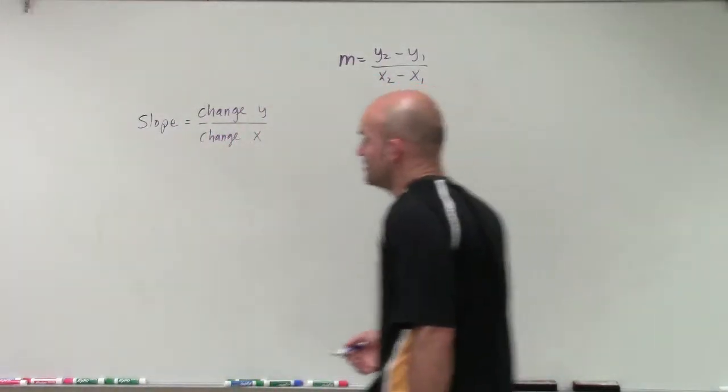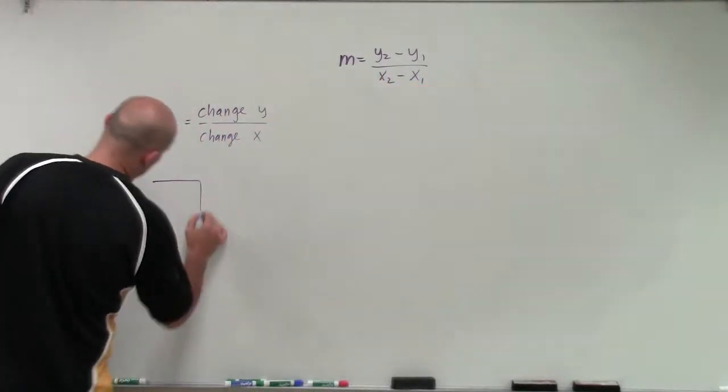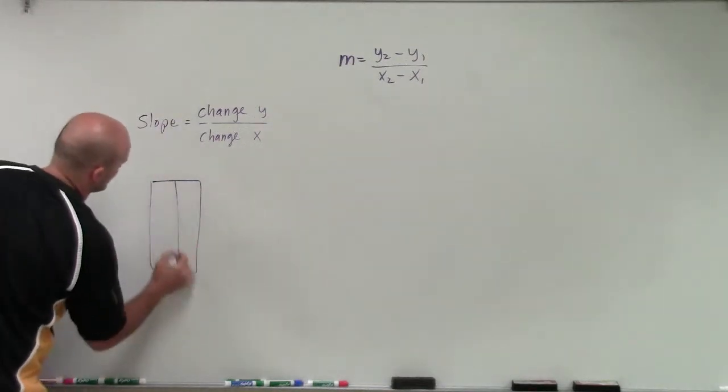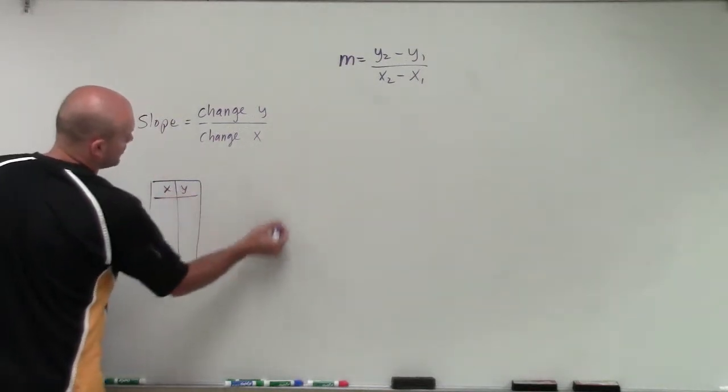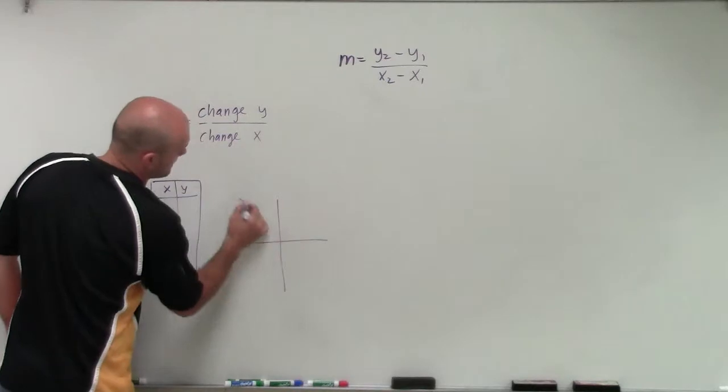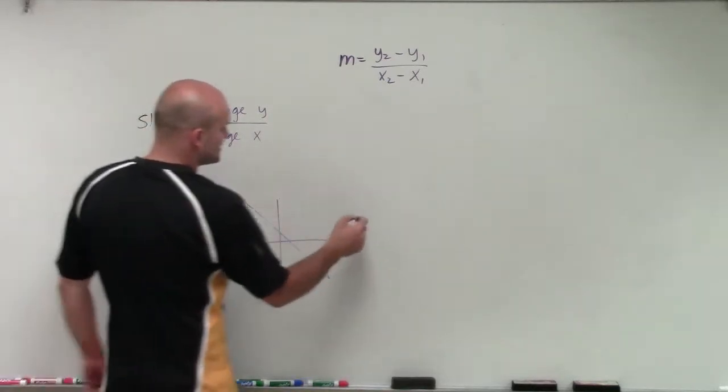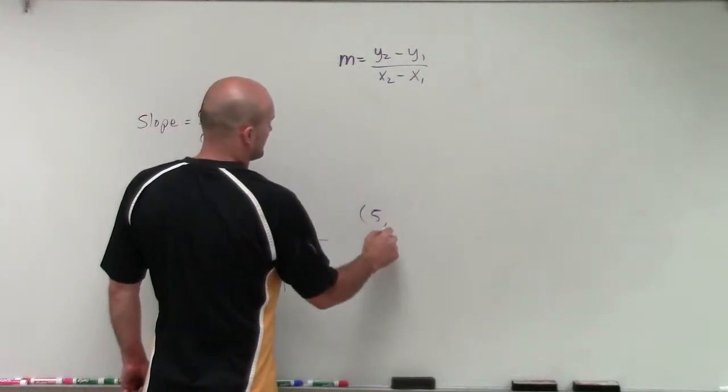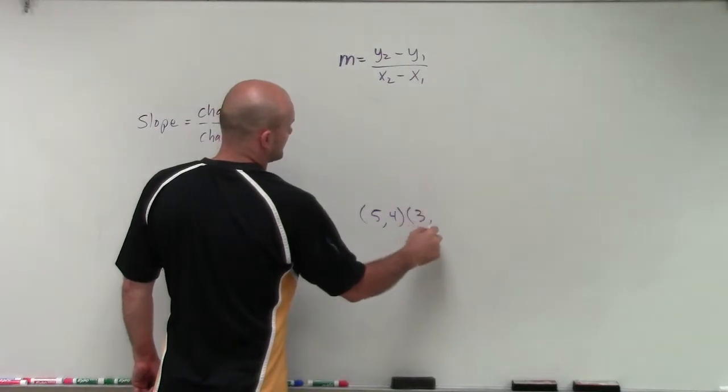We looked at this in a couple different ways. We looked at this in a table, we looked at this in a graph, and we looked at this with two points: 5, 4 and 3, 2.